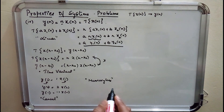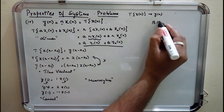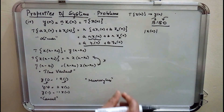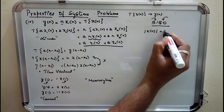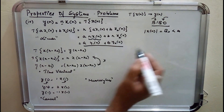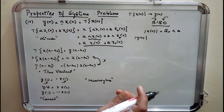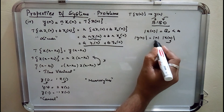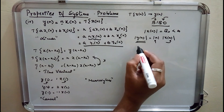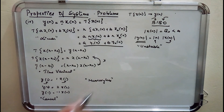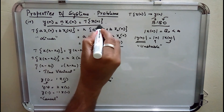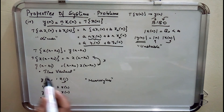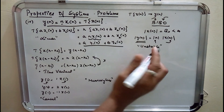Coming to the stability part: the system is said to be BIBO stable if bounded input gives bounded output. Bounding the input means x(n) is less than infinity. Checking the output: |y(n)| = |n|·|x(n)|. While x(n) is bounded, |n| is unbounded and can go to infinity, so y(n) can also go to infinity. Hence the system is unstable. Summary: y(n) = n·x(n) is linear, time variant, causal, memoryless, and unstable.